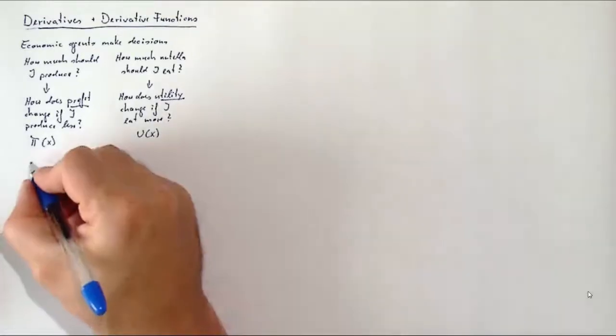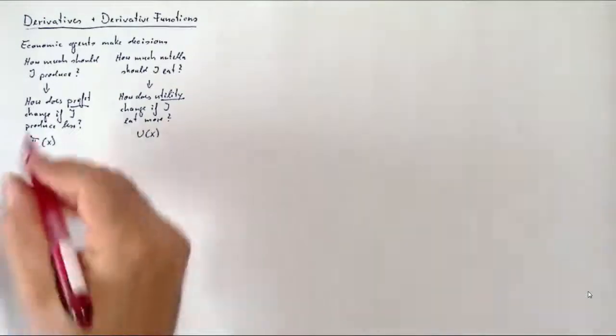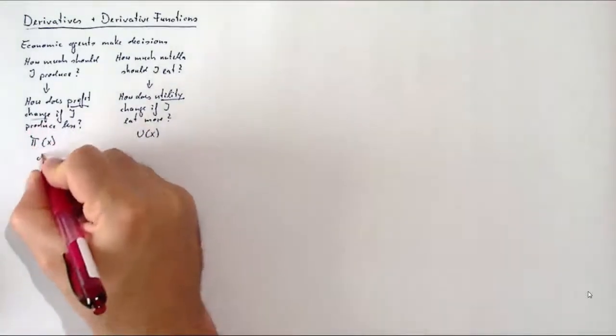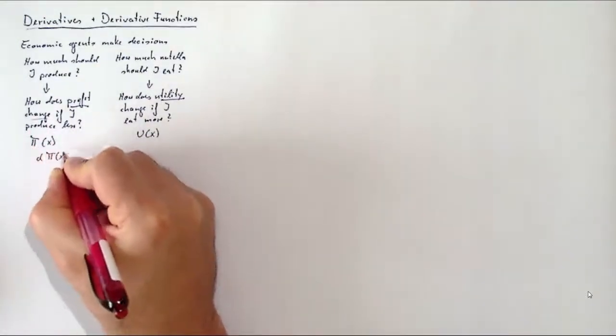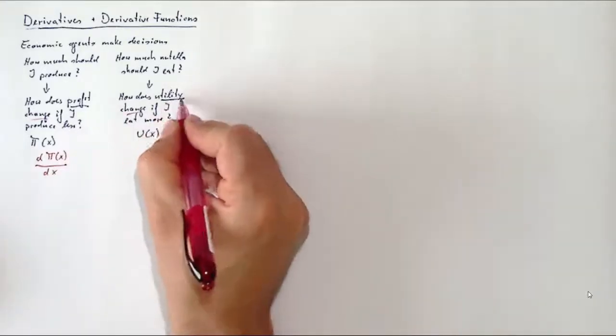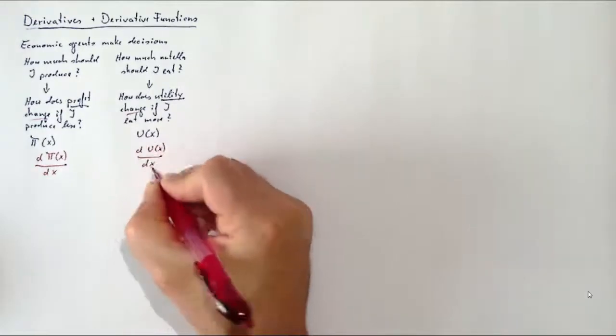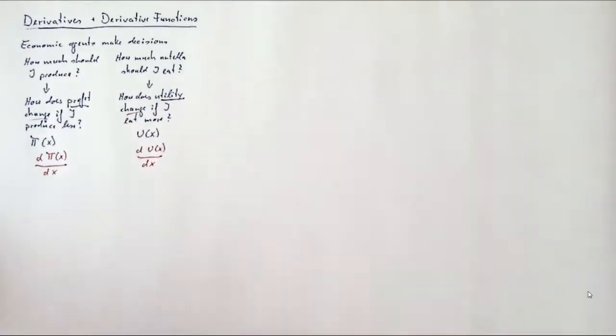Formally, we may be after profit—let's call that π(x), where x is the variable which we can change—or utility u(x), where x is the variable we can change: how much Nutella do we eat, how much do we produce. What we are after is how that profit π(x) changes as x changes, and how the utility changes as x changes.